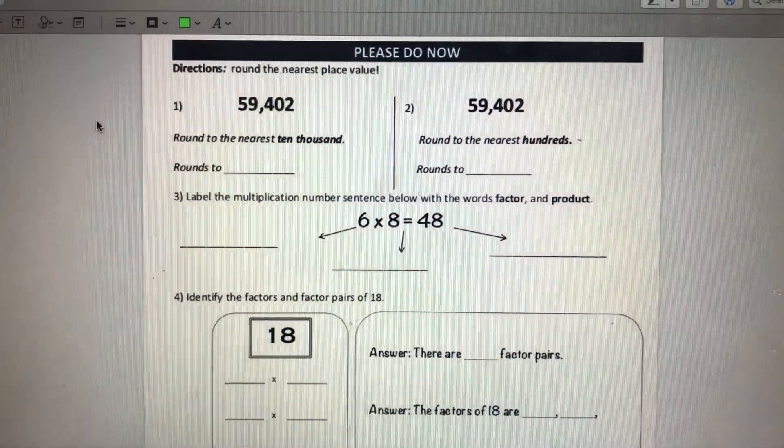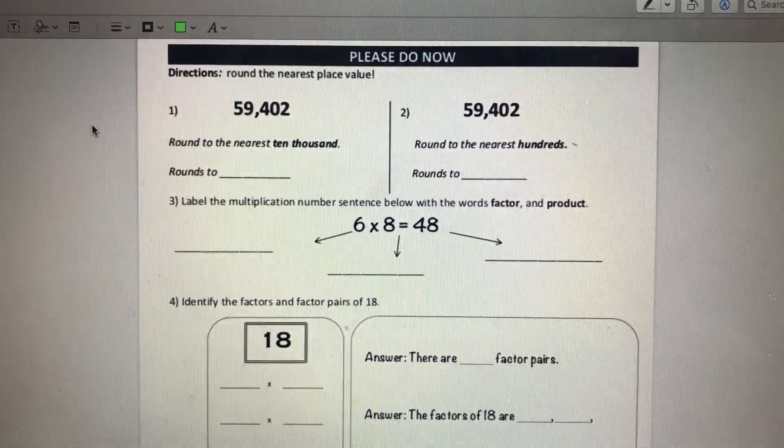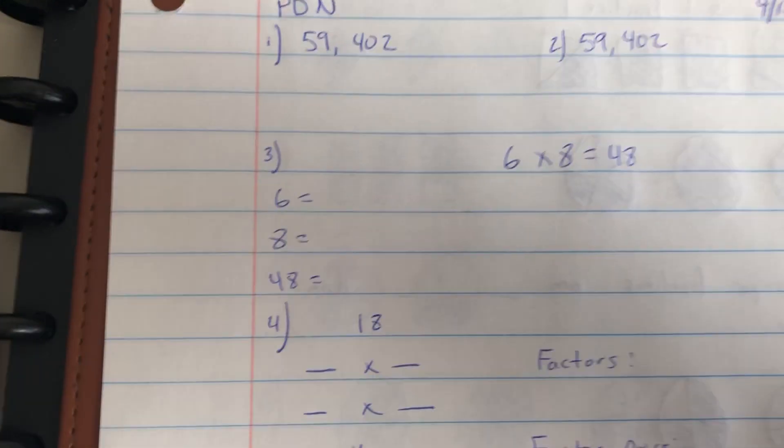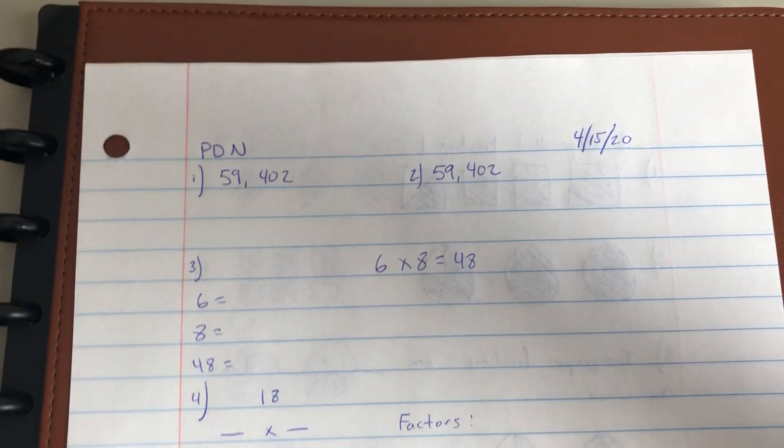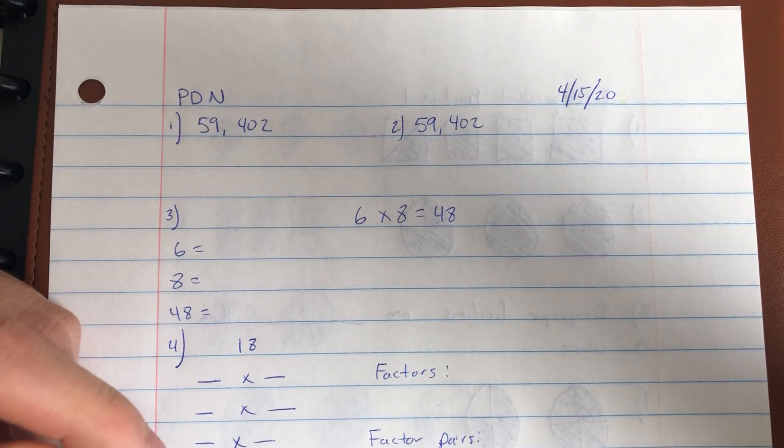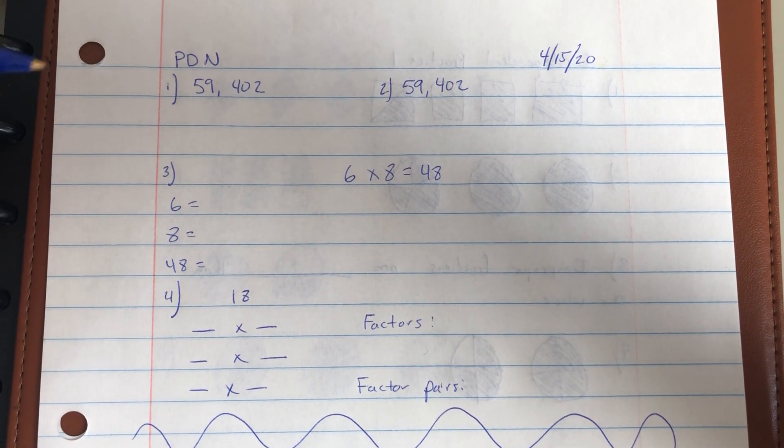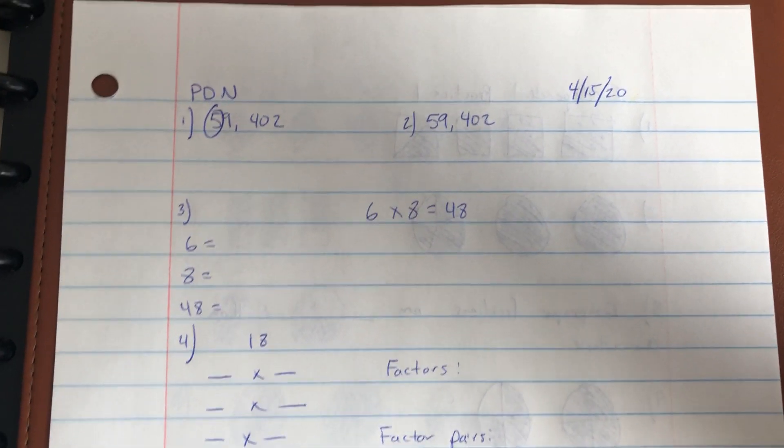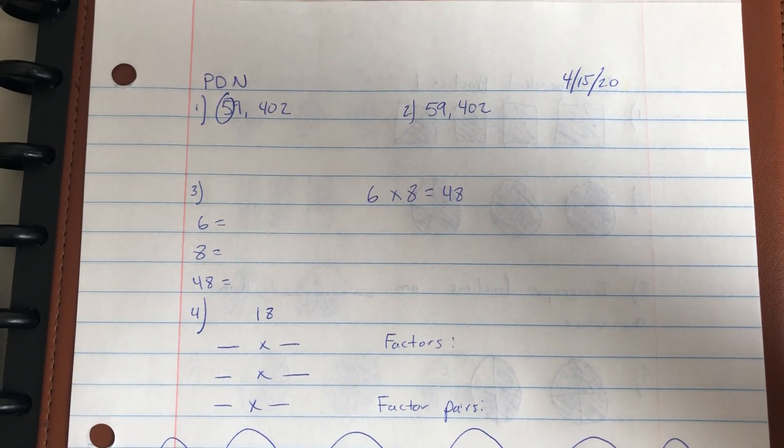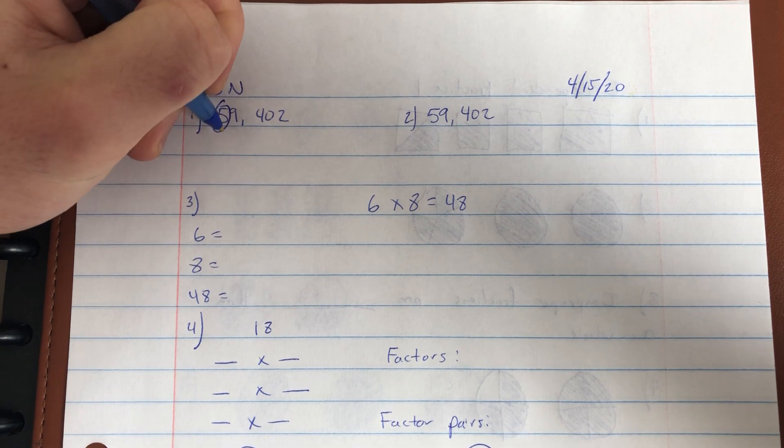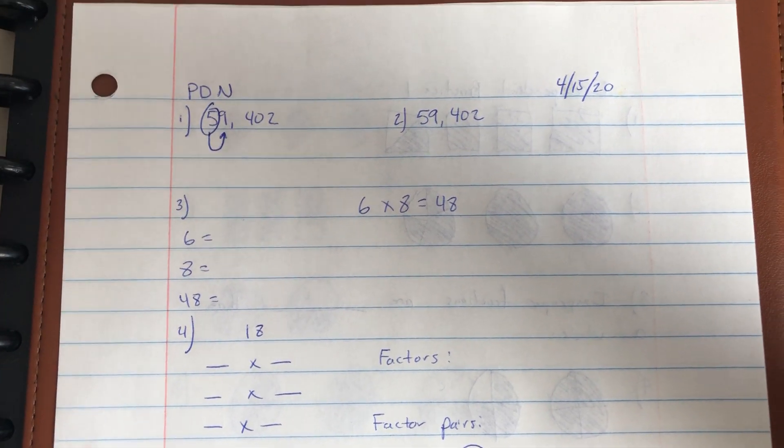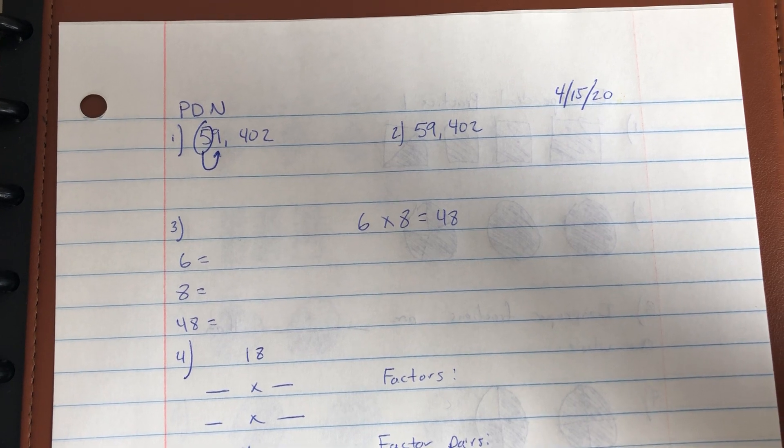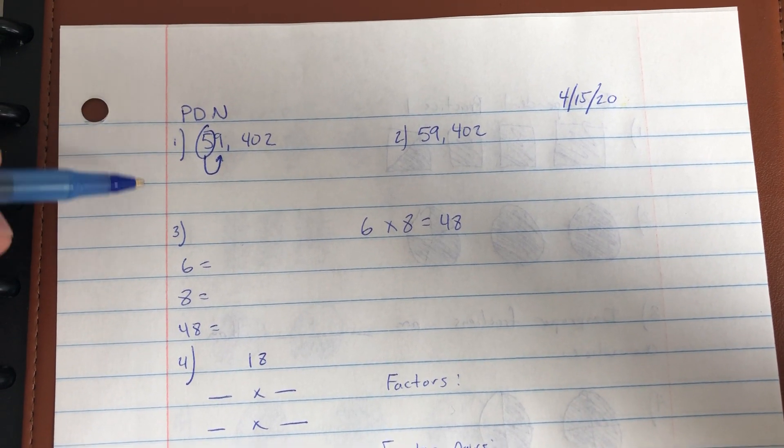Question number one is asking us to round 59,402 to the nearest ten thousands. So what I'm gonna do is I'm gonna circle that digit in the ten thousands place, which is a five. And then I'm gonna make sure that I draw an arrow to my friend next door, which is the nine. And I'm gonna ask myself, is nine greater than or less than five?